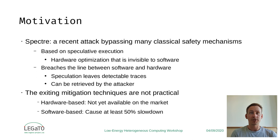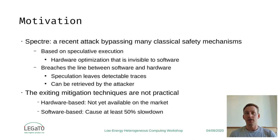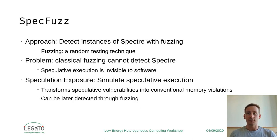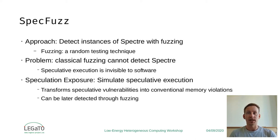There are no deployed hardware patches against Spectre and the software-based mitigations have high overheads. Therefore, our approach was to patch these vulnerabilities on an ad-hoc basis, that is, one-to-one. We propose to detect instances of Spectre with fuzzing.